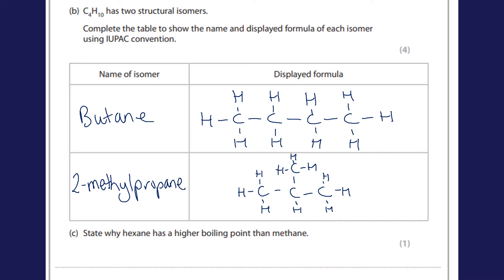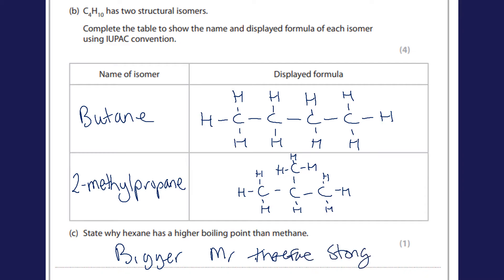State why hexane has a higher boiling point than methane. Hexane is a bigger molecule with a bigger molecular mass, so it has stronger van der Waals forces, which means a higher boiling point.